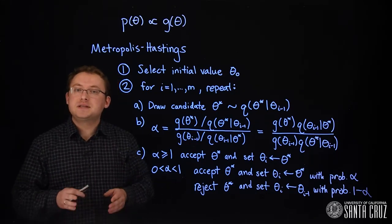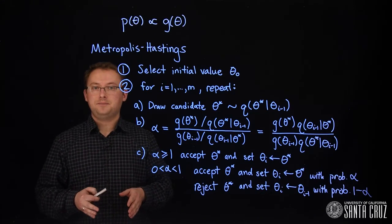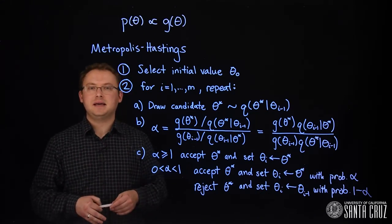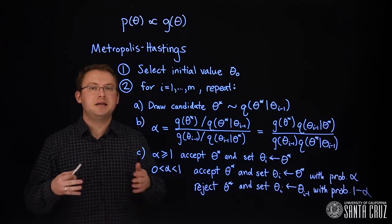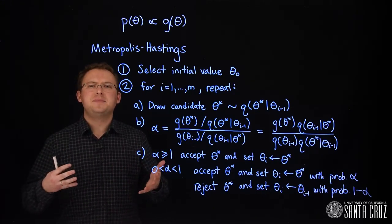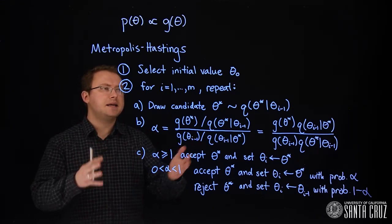However, you still may want to have q have a larger variance than p and see some rejection of candidates as an assurance that q is covering the space well.